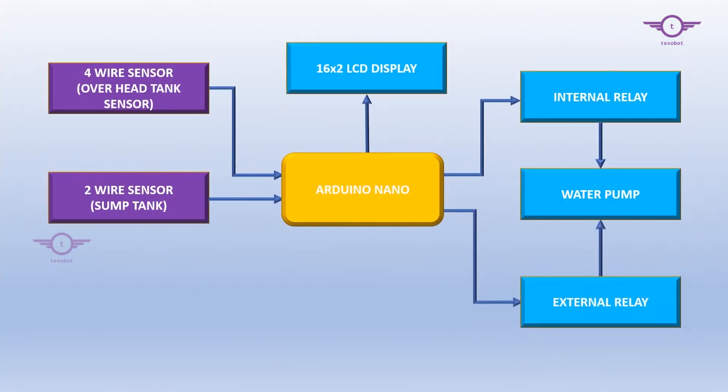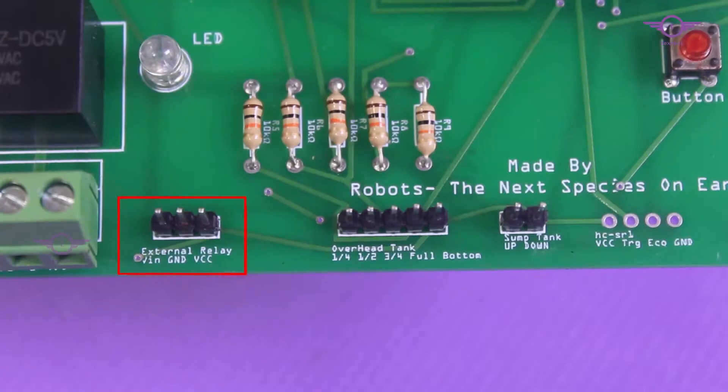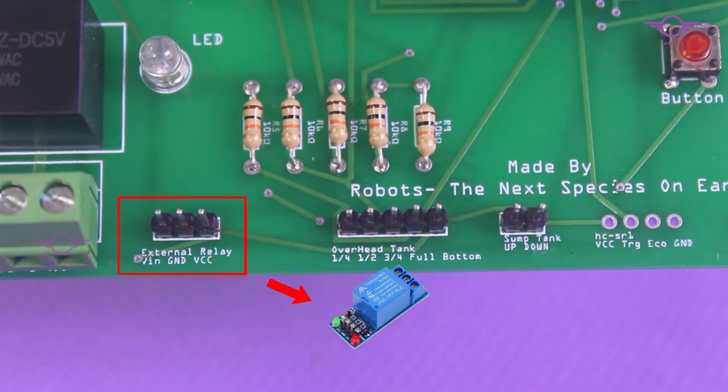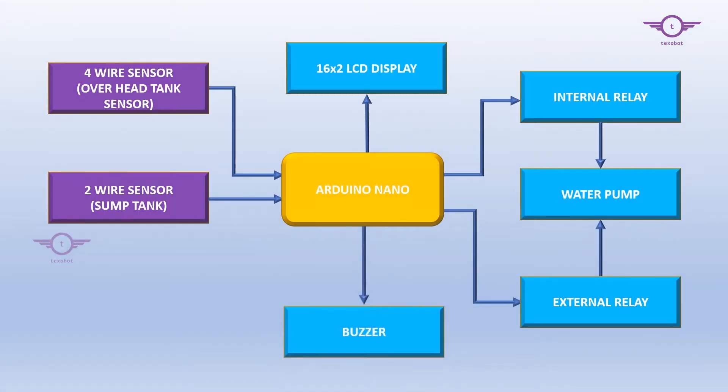The sixth block is the external relay. This is also used for the same purpose. You can use this section to replace the internal relay with any relay which is operating in 5V DC to get better power rating for driving the water pump.